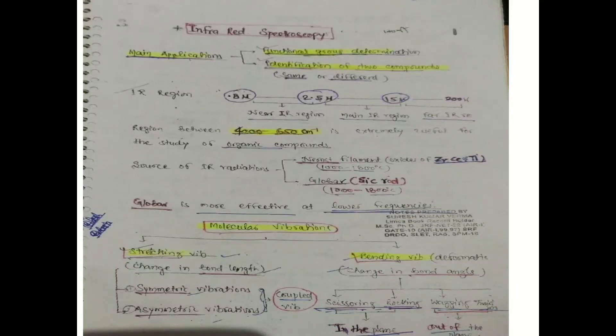Good morning students. Today we are discussing infrared spectroscopy. The main applications of infrared spectroscopy are: functional group determination — by the help of IR spectroscopy we can determine functional groups in organic compounds — and identification of whether two compounds are the same or different. These are the main applications of IR spectroscopy.